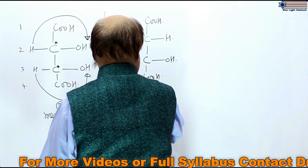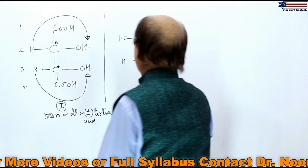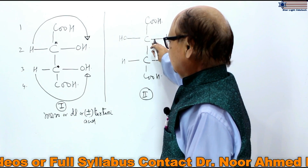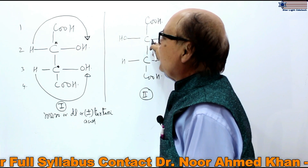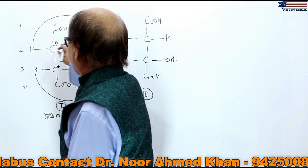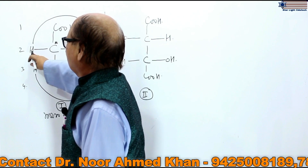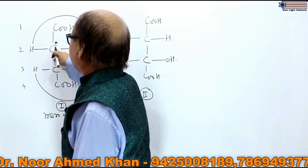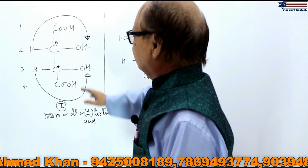This is the second optical isomer of tartaric acid. We are only changing the configuration at carbon number 2 — taking the OH at carbon atom number 2 to the left-hand side and taking the hydrogen atom at carbon number 2 to the right-hand side.